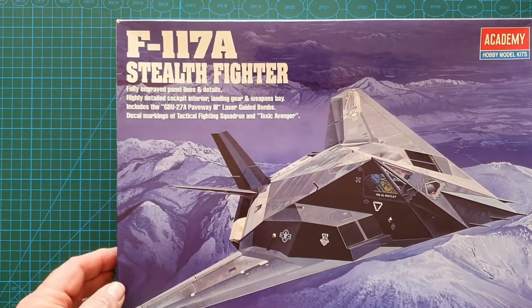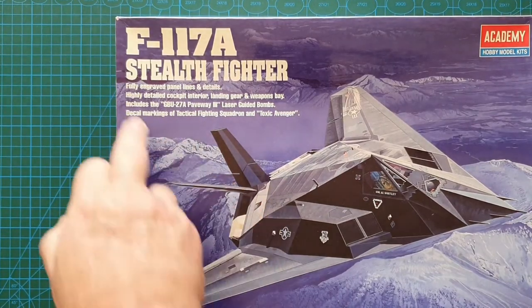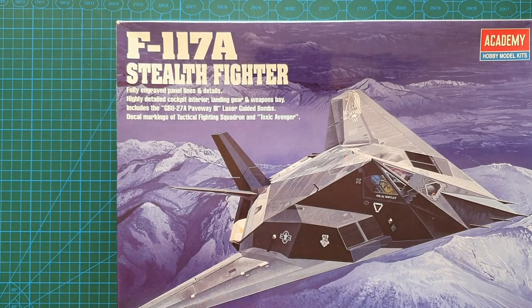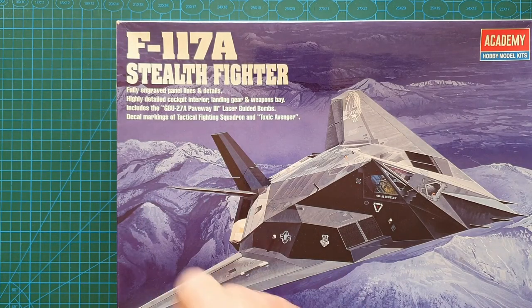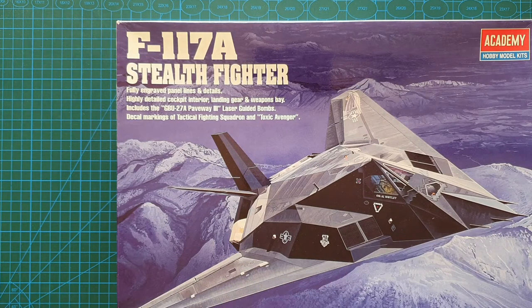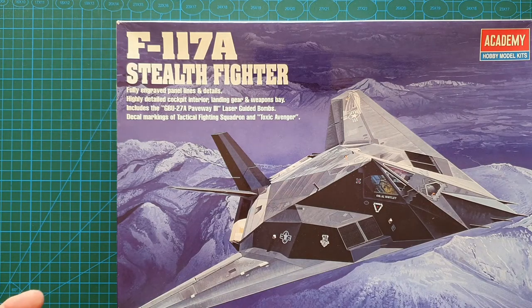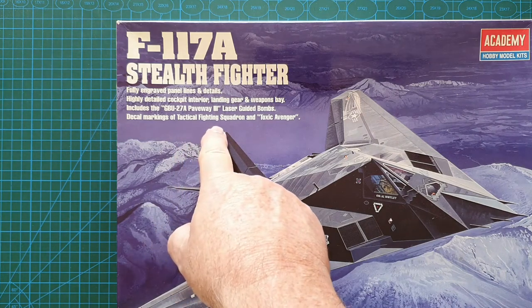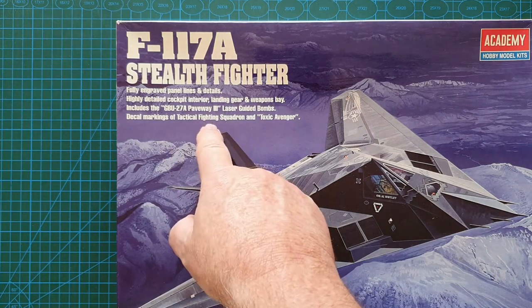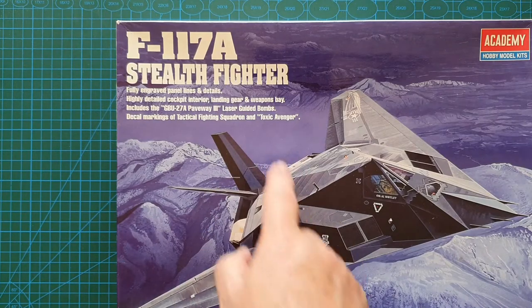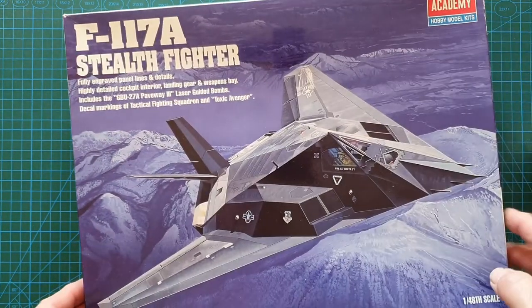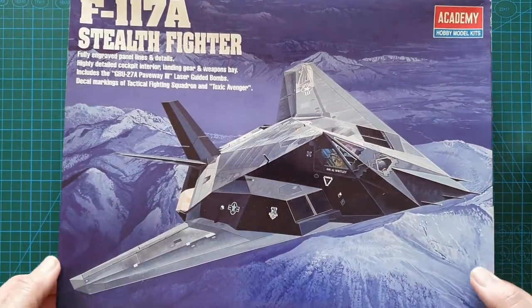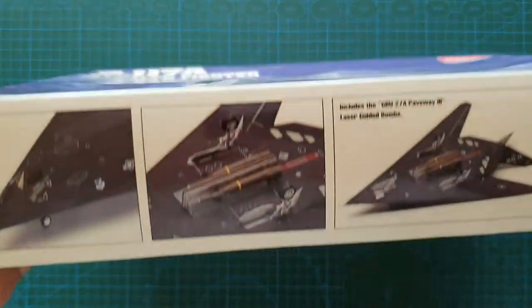The box art is nicely rendered, really nicely done. Low visibility markings are available in this kit. As you can see by the blurb up here, it features fully engraved panel lines, highly detailed cockpit interior, landing gear, two GBU-27 Paveway LGBs included, and markings for Tactical Fighter Squadron and the Toxic Avenger.